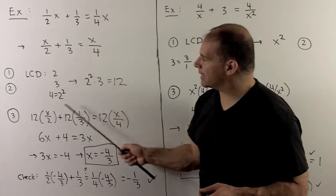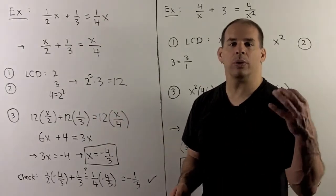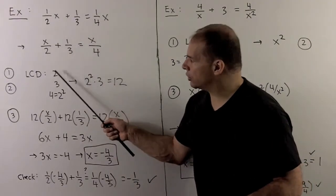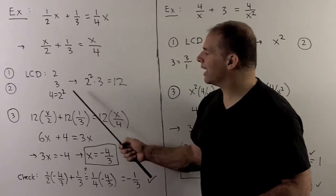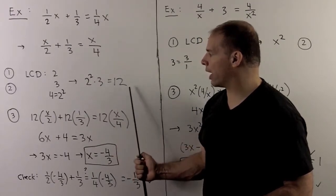For the least common denominator, we use all factors that appear with the highest exponent that appears. So if I have 2, 3, and 2 squared, I'm going to want 2 and a 3. Highest exponent for 2 is 2, so our least common denominator is 12.